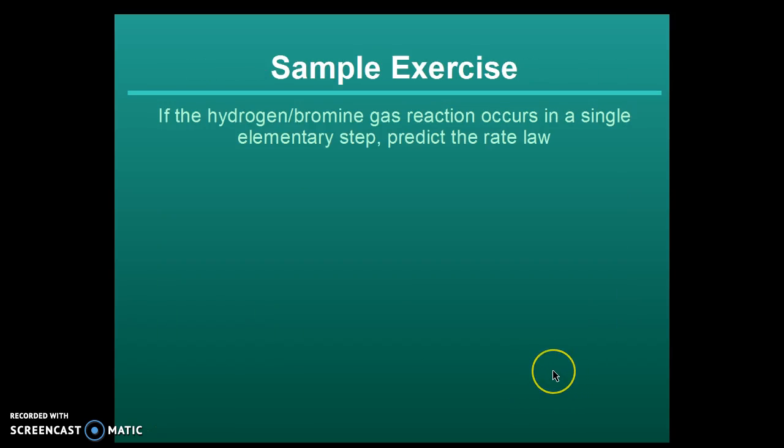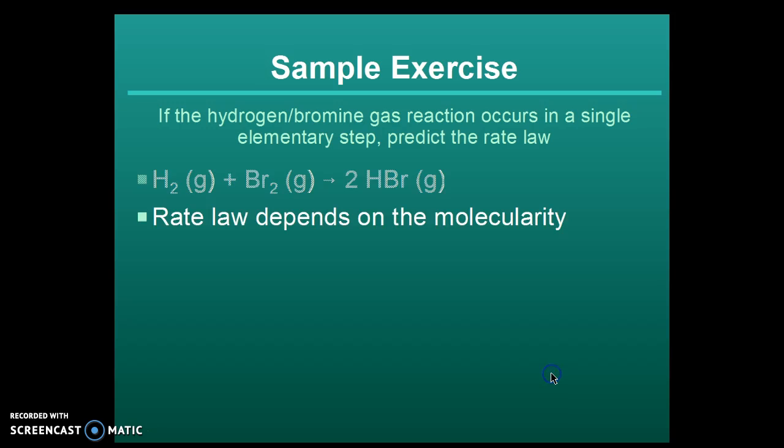Now, let's look at an example. If the hydrogen bromine gas reaction occurs in a single elementary step, predict the rate law. Alright, hydrogen runs into bromine to form HBr. Single step.